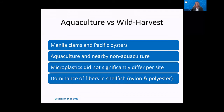To look at potential sources of microplastics in seafood, a study by Covington and others in 2019 evaluated microplastics in manila clams and Pacific oysters from an aquaculture site compared to those wild caught near the aquaculture site, to determine the influence of aquaculture itself on microplastics in shellfish. For example, were there higher concentrations of polymers in shellfish associated with aquaculture, such as polystyrene, polypropylene, and PVC? The authors did not find this to be the case. Instead, there was a dominance of microfibers, notably nylon and polyester, regardless of whether the shellfish was harvested from the aquaculture site or from the wild.